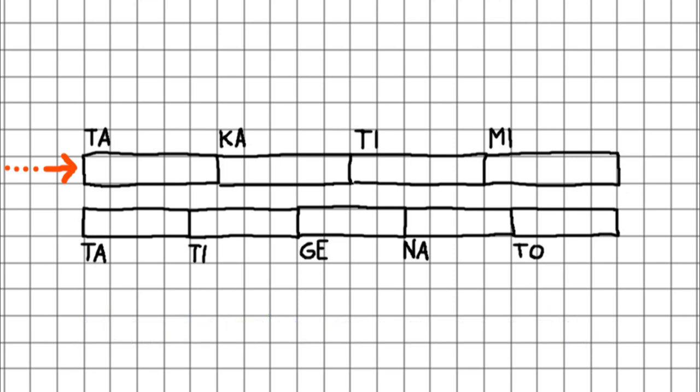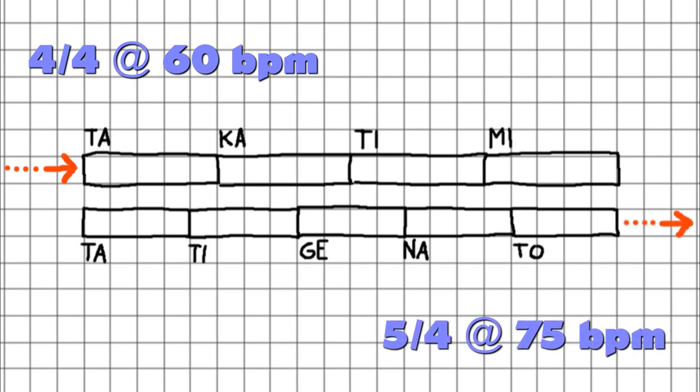So you might come from a 4-4 time signature at 60 beats per minute and end up at 75 beats per minute in a 5-4 time signature — meaning your quarter notes are faster afterwards.